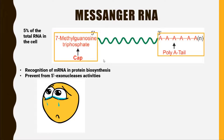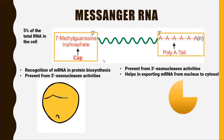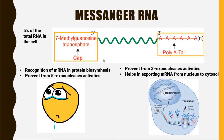On the 3' end, we have a Poly-A tail. The function of this Poly-A tail is to prevent 3' exonuclease activity — this exonuclease cannot degrade the Messenger RNA from the 3' end — and it also helps in exporting Messenger RNA from the nucleus to the cytosol.